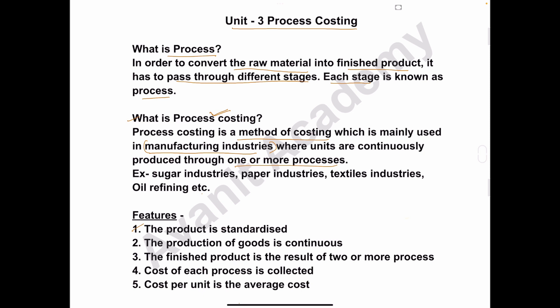Next we'll see the features of process costing. Number one: the product is standardized. In process costing, the product is standardized. Second: the production of goods is continuous. In process costing, the production of goods is continuous.